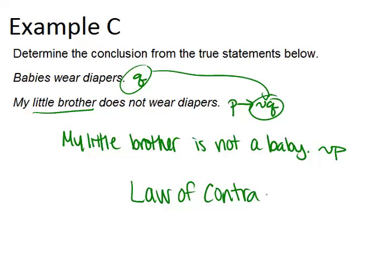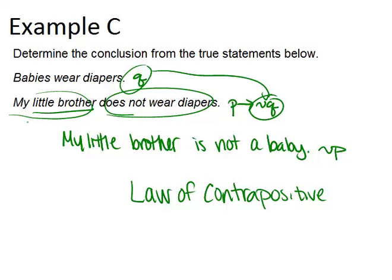Anytime you know the opposite of the conclusion of one of the statements — my little brother does not wear diapers — and we know the opposite, that babies do wear diapers, then our conclusion is the opposite of the original part: my little brother is not a baby. That, again, is the law of contrapositive. It looks a little different because I used P implies not Q as opposed to P implies Q, but it's really the same thing.